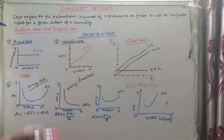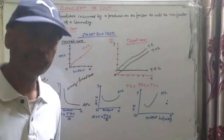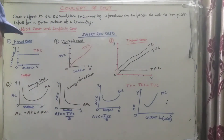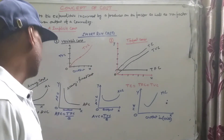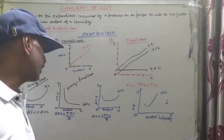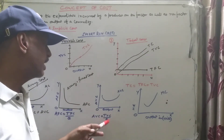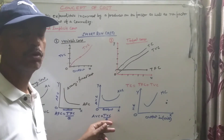Next is the average cost. Average cost (AC) equals average fixed cost (AFC) plus average variable cost (AVC). Average fixed cost is TFC divided by Q (output). Average variable cost equals total variable cost divided by Q, where Q means output.